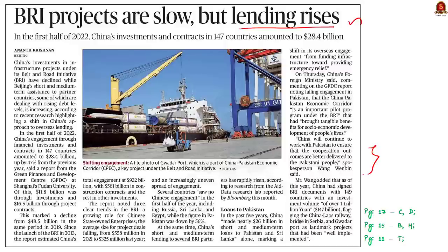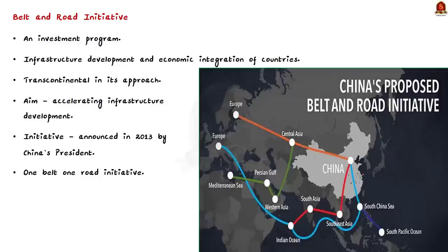In this context, let us learn a few facts about the Belt and Road Initiative. First, what is BRI? It is an investment program that aims at infrastructure development and economic integration of countries along the route of historic Silk Road. The keywords are infrastructure development and economic integration. This BRI is transcontinental in its approach and it aims at accelerating infrastructure development. The initiative was announced in the year 2013 by China's President Xi Jinping and it is also known as One Belt, One Road Initiative.